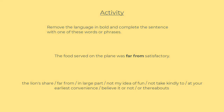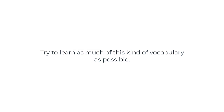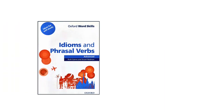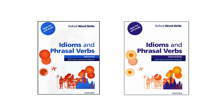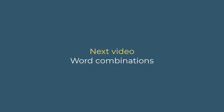Now it's very important that you try to learn as much of this kind of vocabulary as possible, especially if you think you're weak in this area. If that's the case, I highly recommend that you obtain this book and start doing the exercises. There's an advanced version and an intermediate version and they're both really good. In the next video we're going to look at some word combinations that can also help you get a 7 or more for vocabulary.